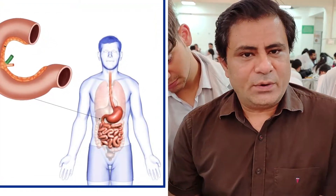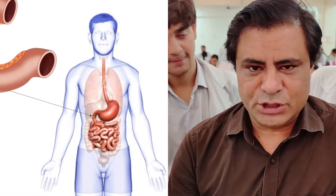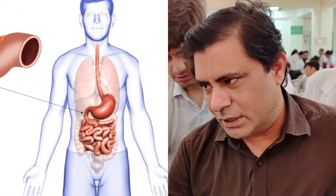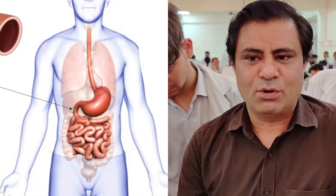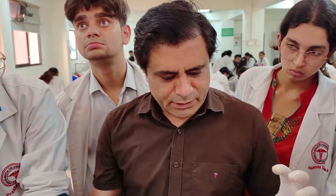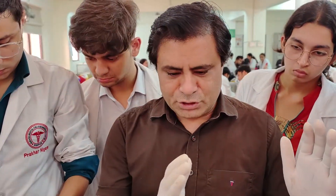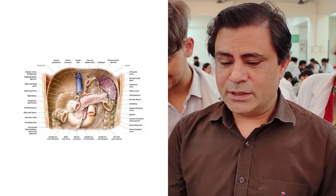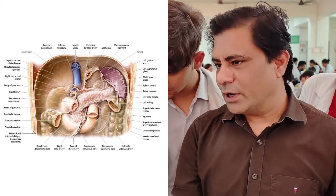It is in continuation with the pyloric end of the stomach, then it continues down as the jejunum, the ileum, and up to the ileocecal junction — that is the length of the small intestine. From proximal to distal, the diameter of the small intestine keeps decreasing. So duodenum is the widest portion of the small intestine, and it is also a fixed portion of the small intestine.